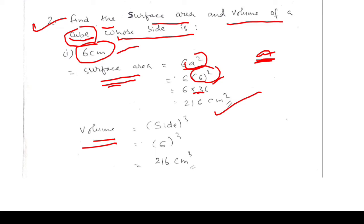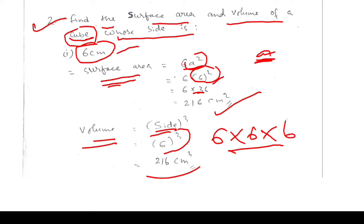The formula for volume of a cube is side³. Side is 6 cm, so 6³ = 6 × 6 × 6 = 216 cm³. This way we have got the surface area as well as the volume of the cube.